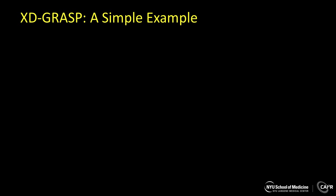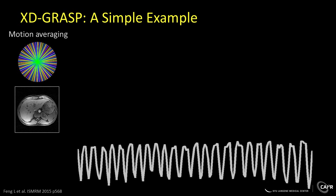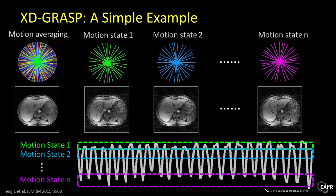Let's start with a very simple example. Imagine that we are doing a continuous data acquisition using a golden angle radial sampling scheme. If we only do a gradient reconstruction including all the acquired spokes, we may see some residual respiratory motion blurring. And if we load the respiratory motion signal, we can sort the acquired data into multiple motion states or multiple motion phases to resolve the respiratory motion. Of course, this data sorting process will generate some undersampling artifacts, because the image at each motion state is just reconstructed from a subset of the total acquired data.